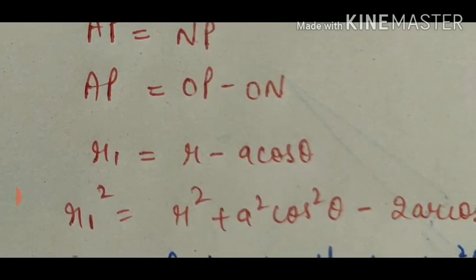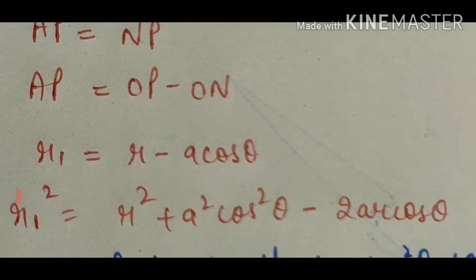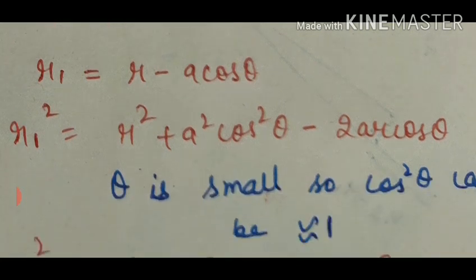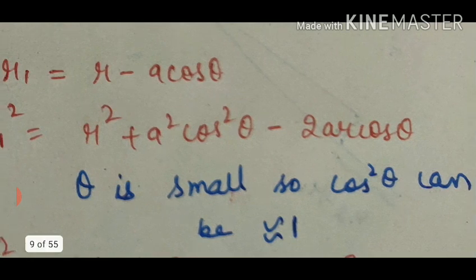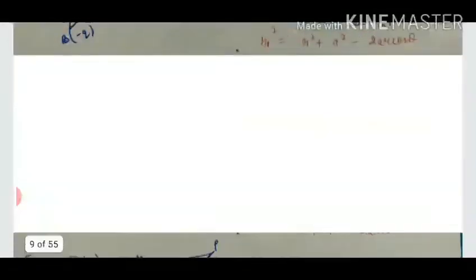So now I am having expression of R1. R1 is R minus A cos theta. I am doing square on both sides. So after squaring, R1 square will be equal to R square plus A square cos square theta minus 2AR cos theta. But theta is small. So cos square theta can be taken approximately equal to 1. You are getting the final expression as R1 square equal to R square plus A square minus 2AR cos theta.